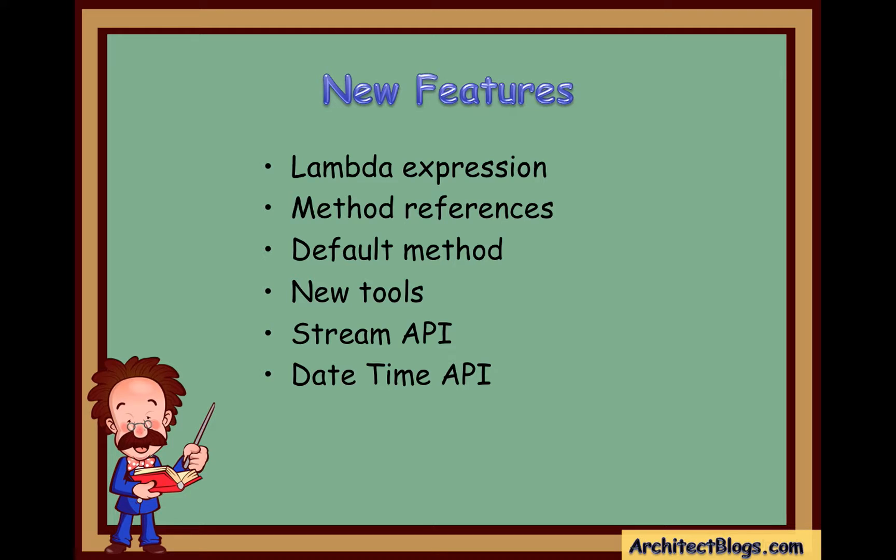Some new compiler tools and utilities are added to figure out dependencies. Next, a new stream API to facilitate pipeline processing was added. An improvised version of the DateTime API was also added in Java 8 compared to Java 7.